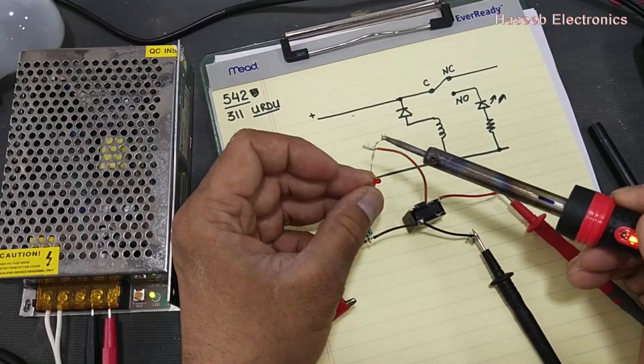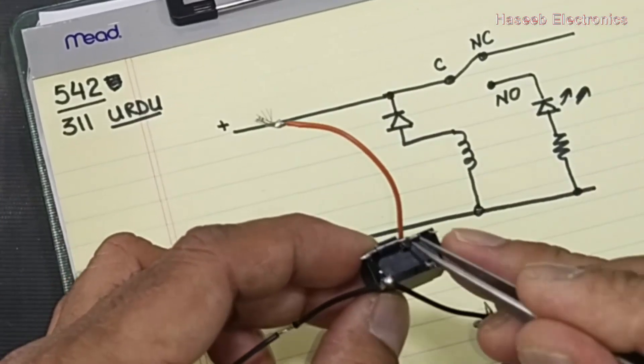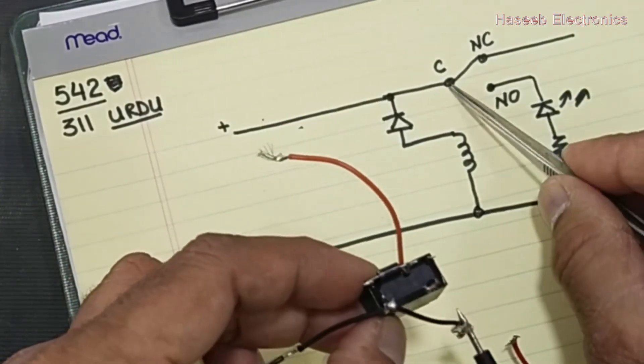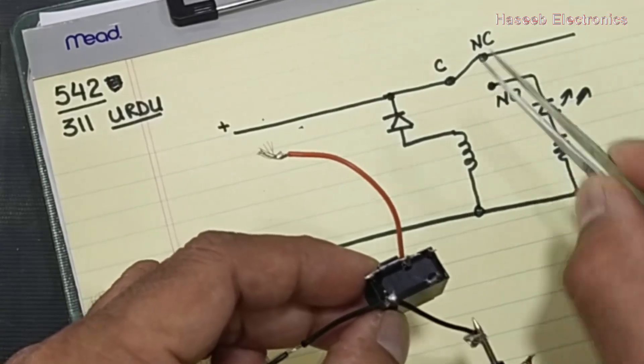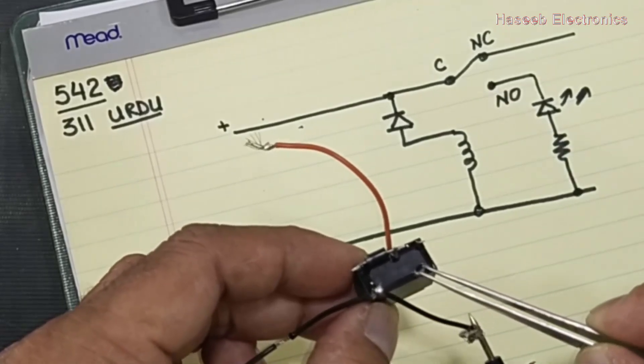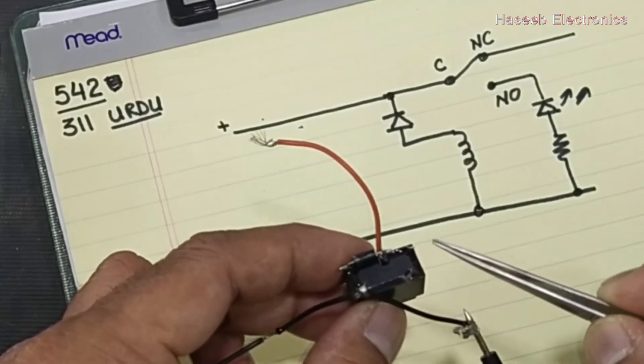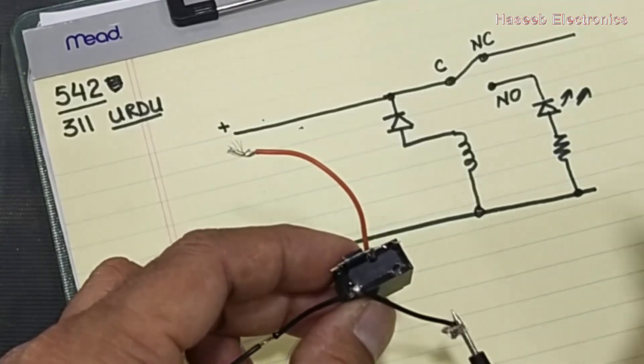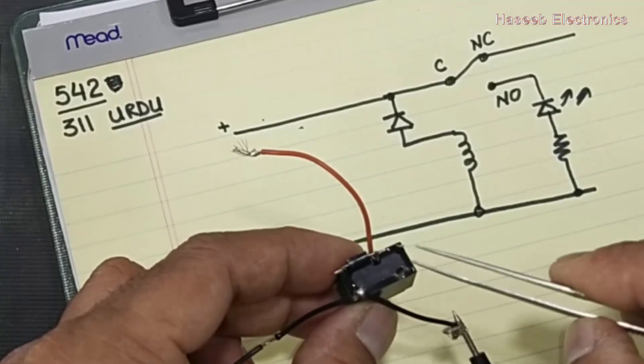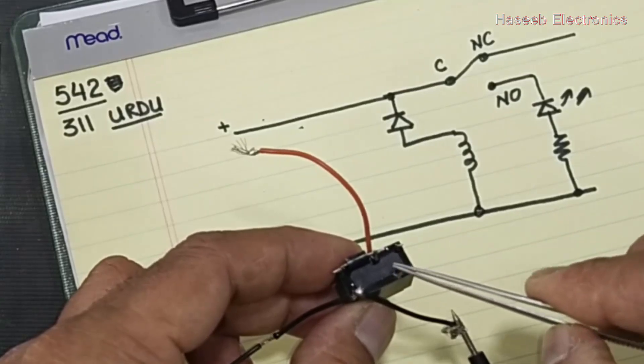This is the common point of this relay, and we will use the normally closed point. In the last video, we connected to the normally open point, but now we will connect the load to the normally closed points.